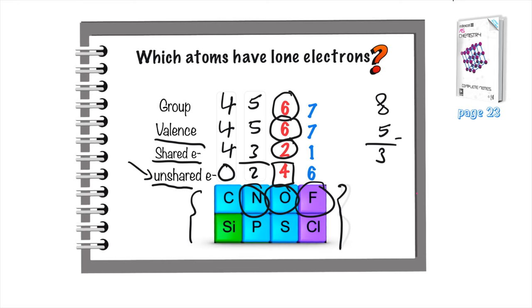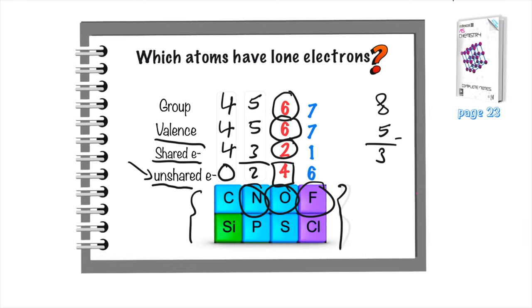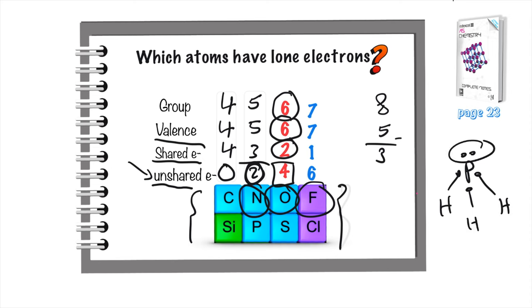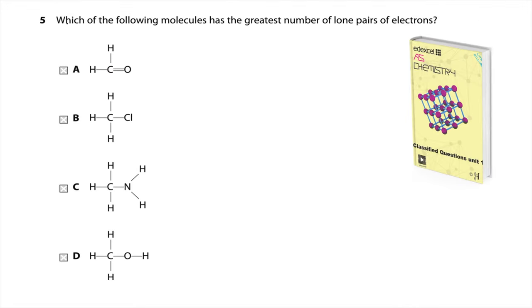Every time you draw a molecule containing oxygen, you must put the unshared electrons — oxygen will always share two electrons and always have four unshared electrons. I can apply this to PH3 as well. Phosphorus is a member of group five, so it has three shared electrons with the hydrogens, but it must also have one pair of lone electrons in every single molecule.